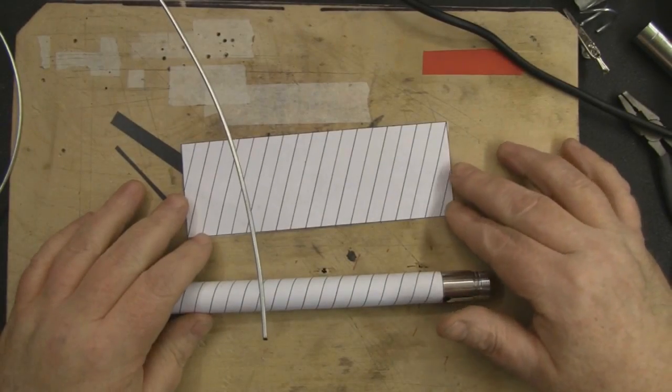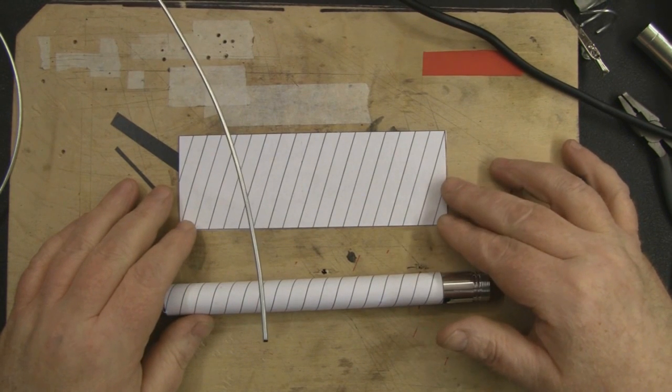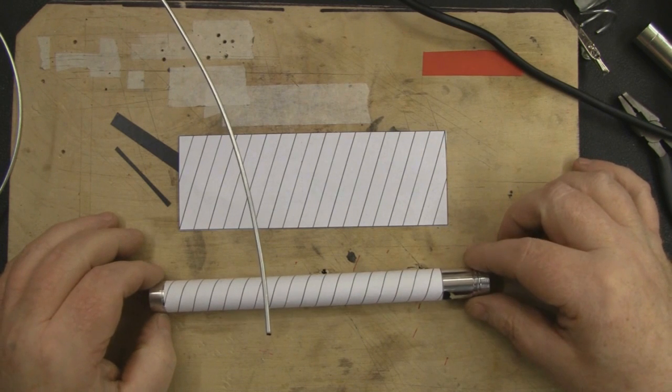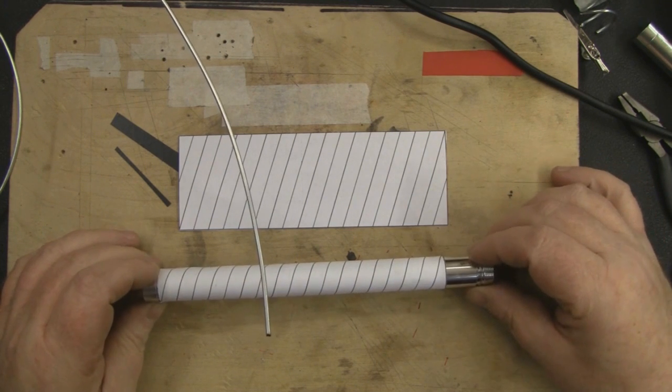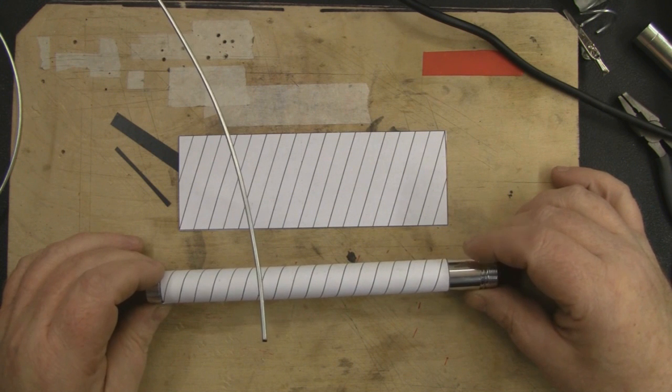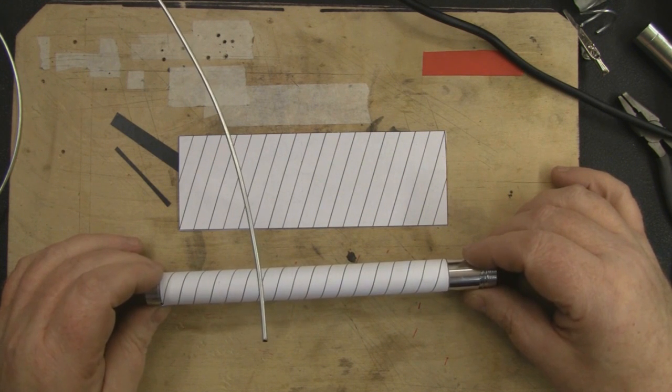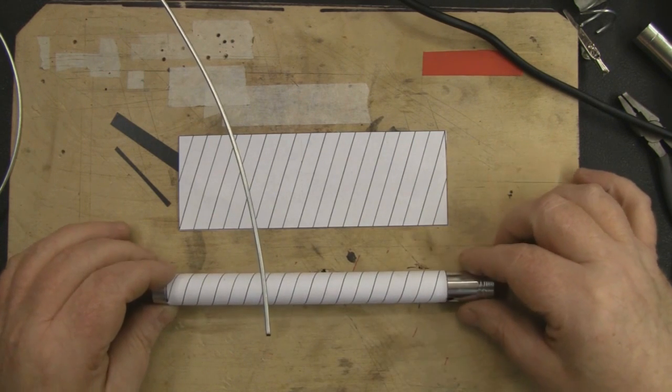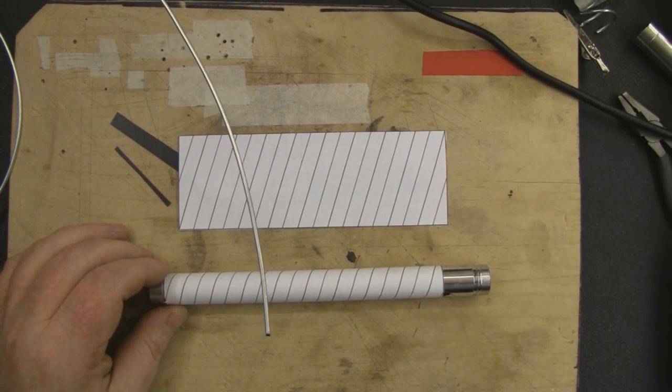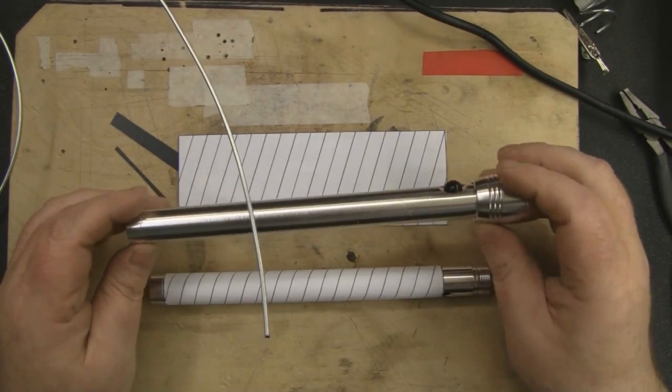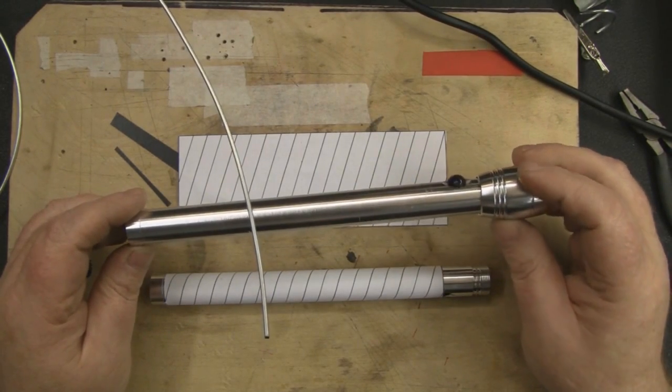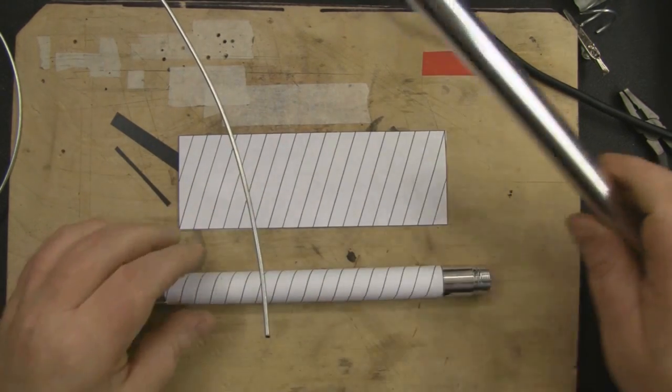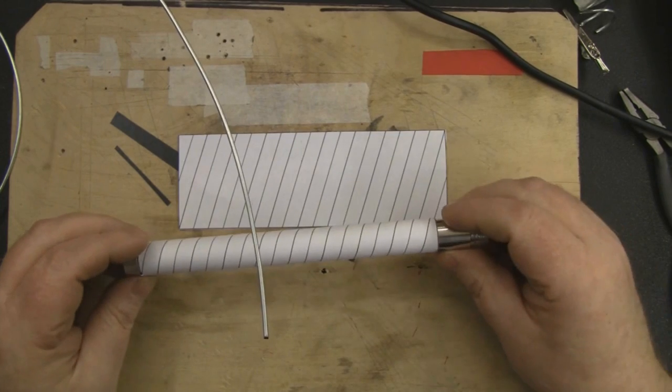To make this antenna, download the template in the description box below and cut it out, then find yourself a piece of tubing, preferably metal or hard plastic, that is exactly 18 millimeters in diameter and wrap the template around the tubing. I found one of these cheap torches from the pound shop, took it to pieces, it's exactly 18 millimeters diameter, and I've wrapped my template around that.